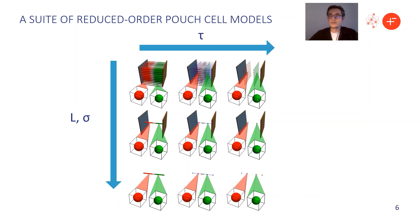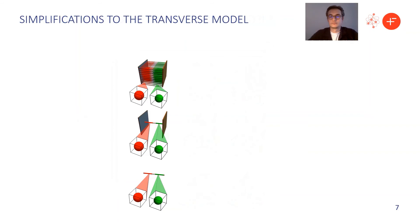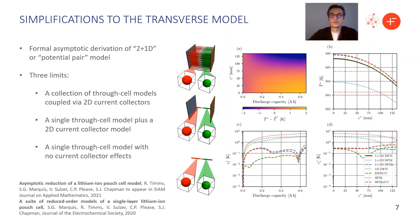Now let's take a look at making simplifications in the other direction, that is, the transverse model. So here, what we're really deciding is how many of these through-cell models do we want to solve? Do we need to solve a large collection of through-cell models? Do we need to solve just a single average model? Or do we need to do away with the current collectors entirely?